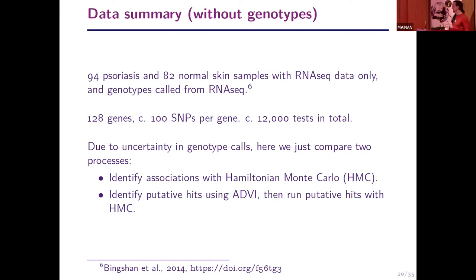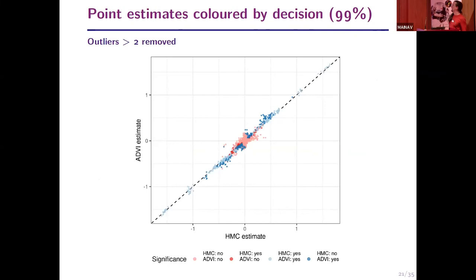The data I'm using here is 92 psoriasis and 82 normal skin samples with RNA-seq only, and genotypes and haplotypes called from the RNA-seq. I'm looking at about 12,000 tests. The ADVI estimates are again noisy with a smudge along the diagonal and a number of outliers removed. Performance is substantially worse, possibly because it's a more complex high-dimensional model. There are considerably more HMC-significant associations that ADVI misses when using the same evidence threshold.